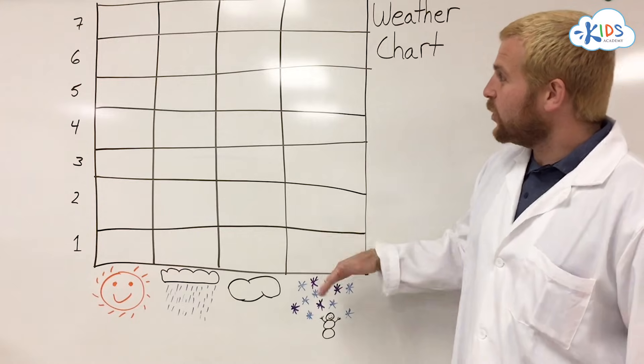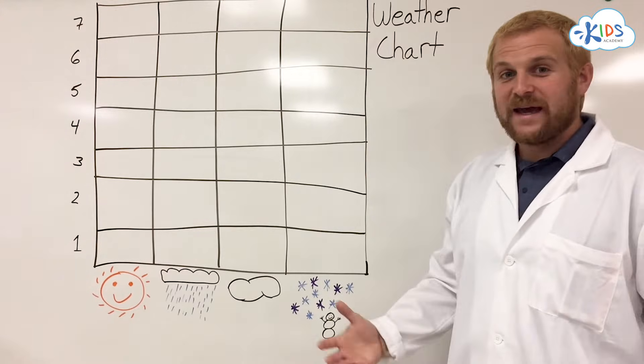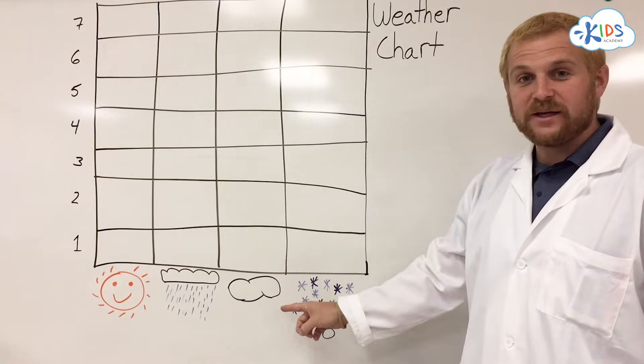And after a month or so, we'll have a full chart to show us how many days it's been sunny, rainy, cloudy, or snowy.